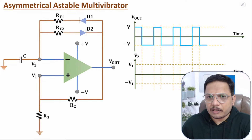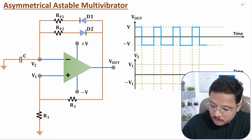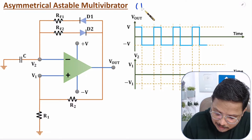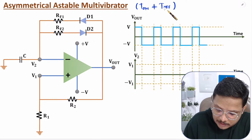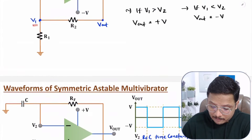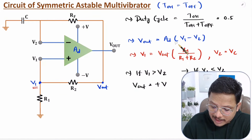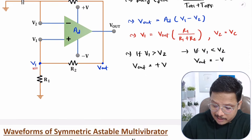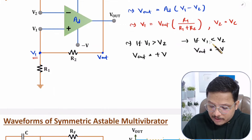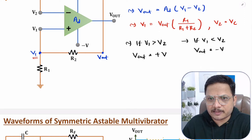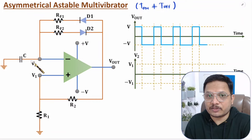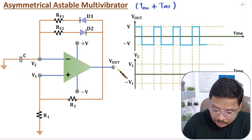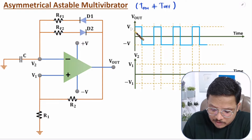Now I am going to explain the asymmetric astable multivibrator, in which the duty cycle is not 50%. Here T-on is not equal to T-off. The same equations apply: V-out equals A_D into (V1 minus V2), where V1 is determined by the feedback resistors and V2 is V_C. If V1 is greater than V2, V-out is V-plus; if V1 is less than V2, V-out is V-minus. The only difference is in how the capacitor is charged.